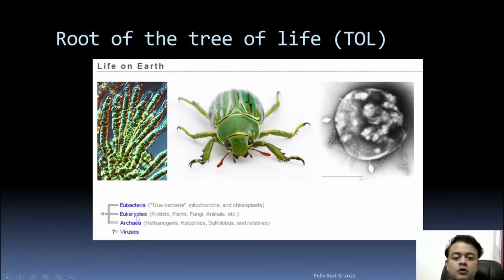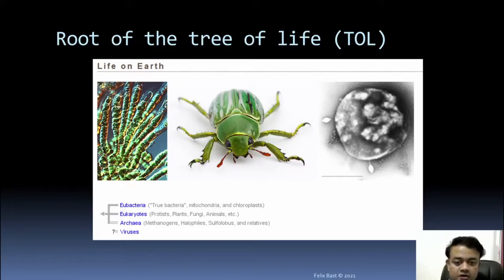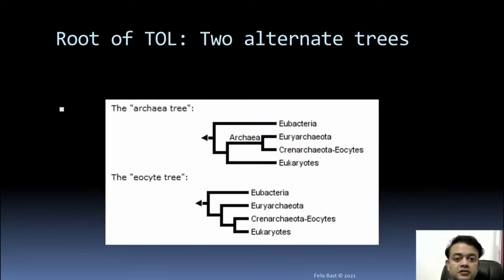Broadly there are three domains: Eubacteria, Eukaryotes, and Archaebacteria. Both Eubacteria and Archaebacteria are prokaryotes, while Eukaryotes are eukaryotes. That is the root of the tree of life.